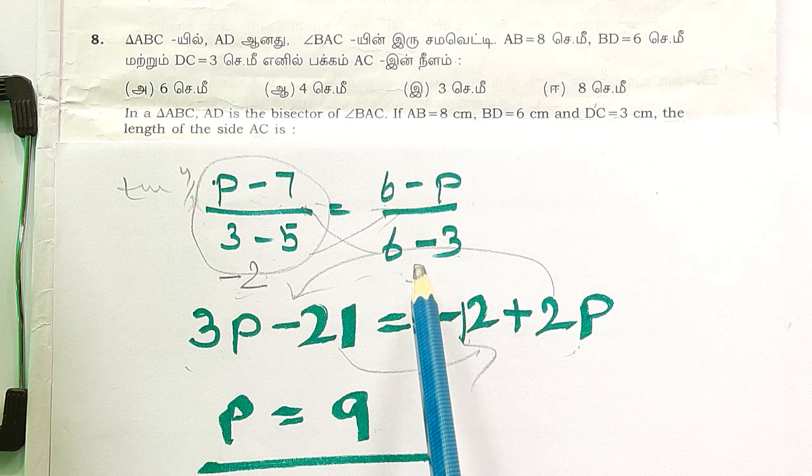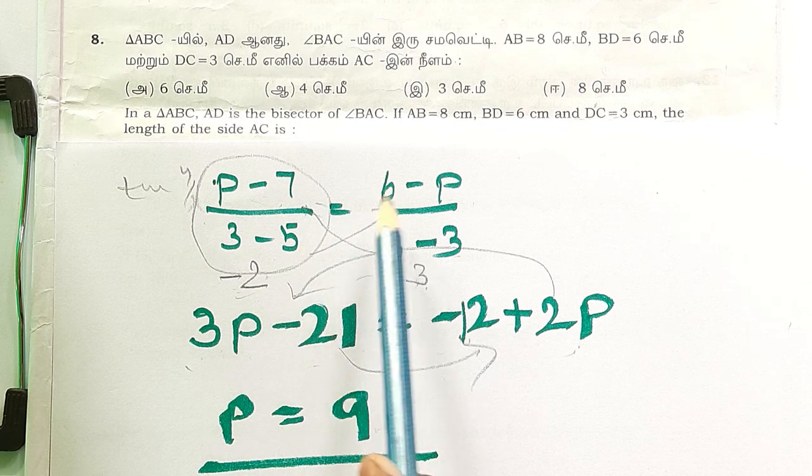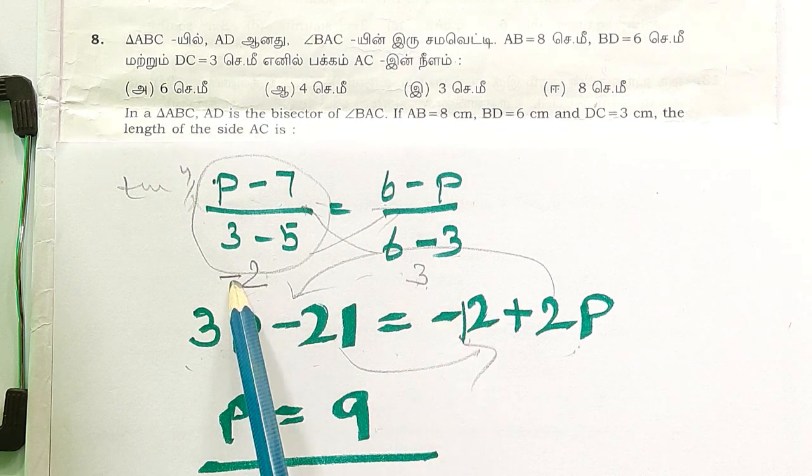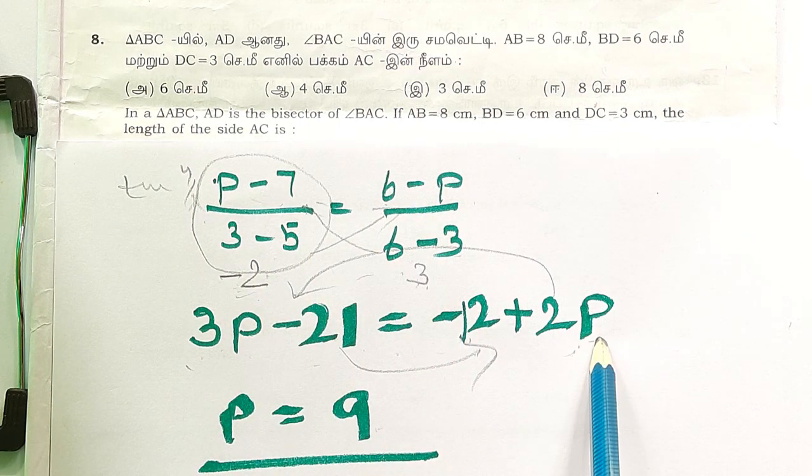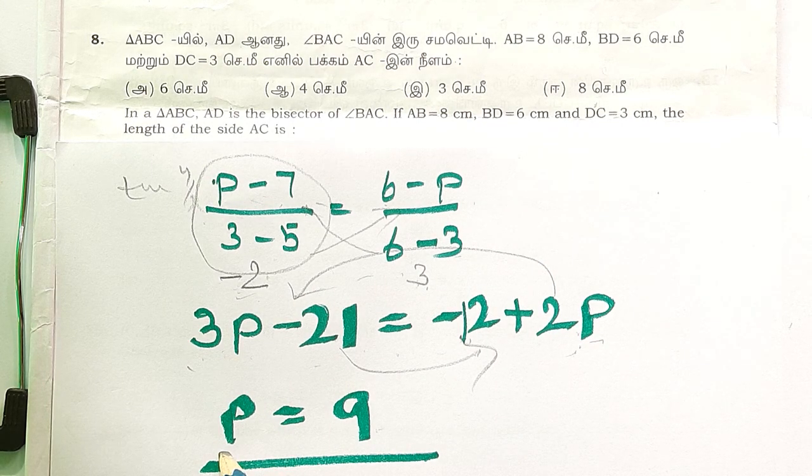on both sides: 3p minus 21 is equal to minus 12, minus into minus plus 2p. 2p shifted, p, 3 minus